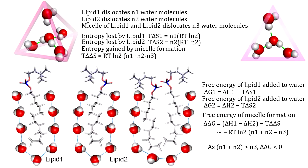Now, if these two lipids come close and form a micelle, obviously you can expect that some water molecules would be returning to the bulk water. So instead of adding lipid 1 and lipid 2 separately, if we add their micelle, it would have displaced N3 number of water molecules, such that N3 is less than N1 plus N2.